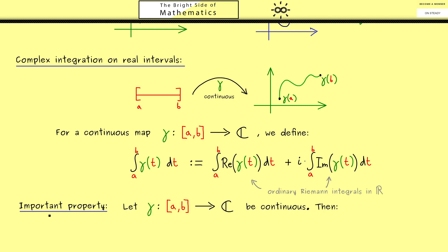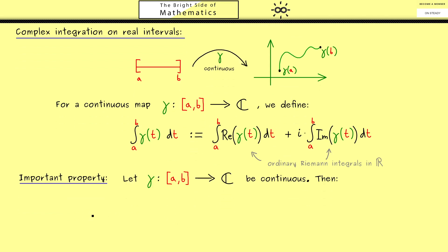However we are able to substitute it for an estimate with the absolute value. Indeed this is an important property we will need throughout this course. It tells us that we can estimate the absolute value of the complex integral. Namely it is less or equal than the ordinary real Riemann integral where we put in the real function given by the absolute value of gamma.